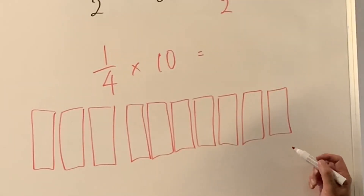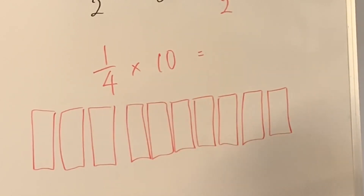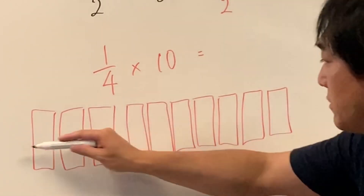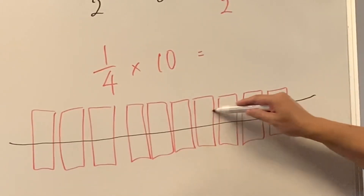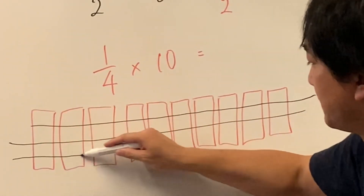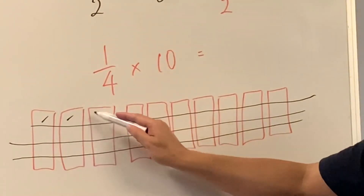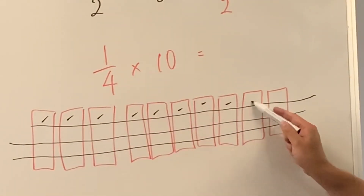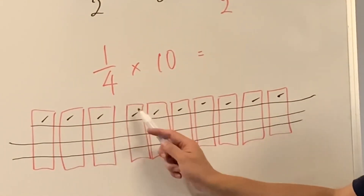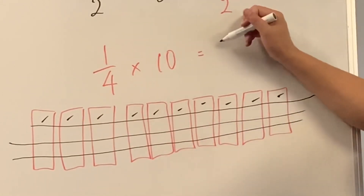I have 10 chocolate bars and I need 1 quarter of them. So I'm going to cut the whole thing into quarters, and I take these quarters: 1, 2, 3, 4, 5, 6, 7, 8, 9, 10 quarters.